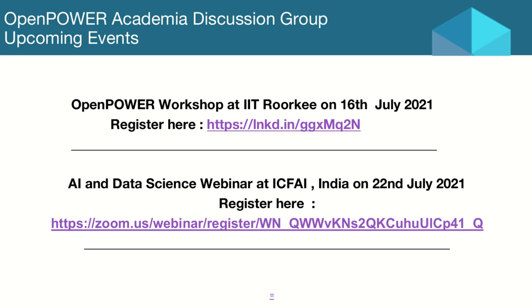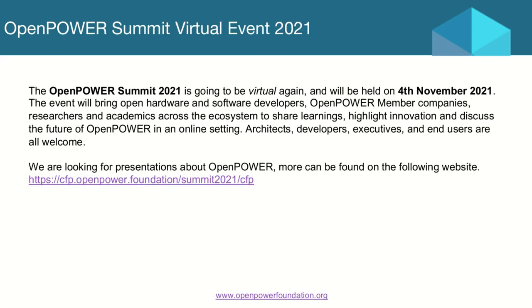Immediately after, we have another virtual workshop with ICFI — a management and technology institute with 13 institutes across India — discussing how AI and OpenPOWER systems can help build AI solutions. Additionally, the OpenPOWER Summit virtual event 2021 has been announced for November 4th, 2021. You can participate and submit your ideas or papers on solutions you have run on Power systems — a great opportunity to present.